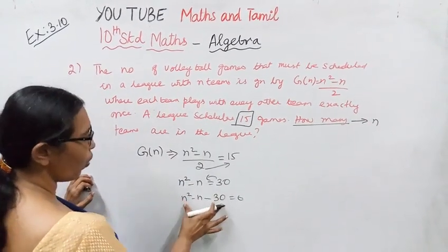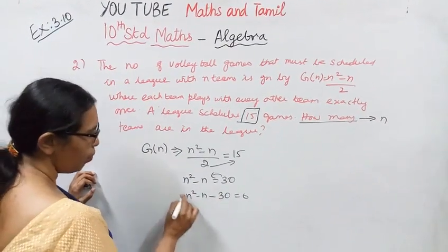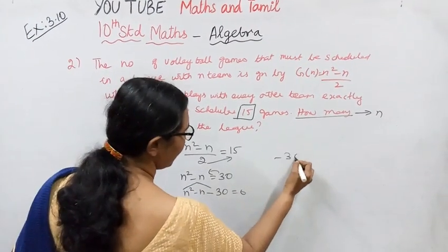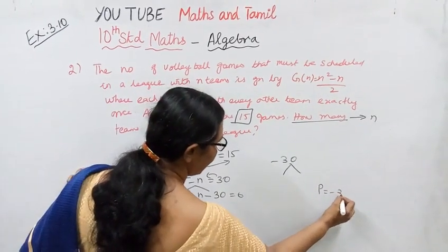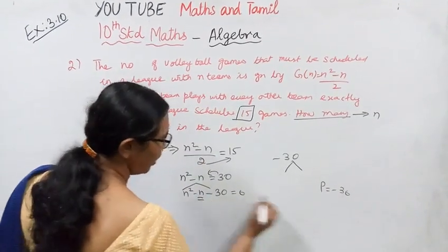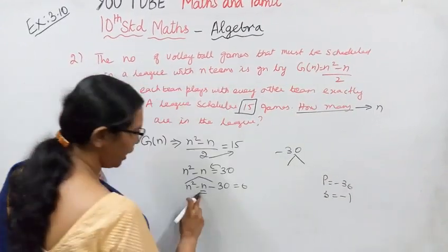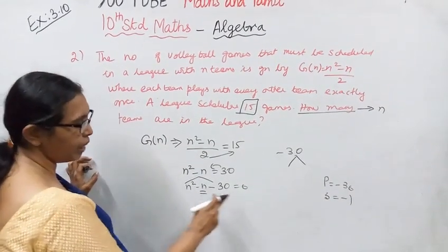This is a quadratic equation. We need 1 × -30 = -30. The product is -30 and the sum is -1.